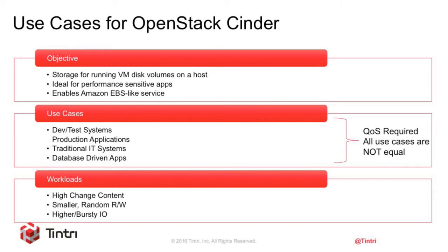This became important for us when we looked at previous OpenStack Cinder presentations from other storage players and community folks. We saw that Cinder is used for performance-sensitive apps in use cases like dev test, production applications, traditional IT, and database-driven apps — and that's where the QoS requirement became the most important for our customers. Not all apps are equal: some are on the higher priority list, some on the lower. For database-driven apps, some are very latency-sensitive while others can live with latency, so you put them into tiers.